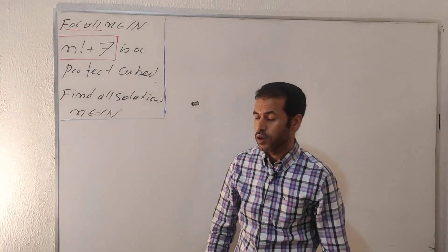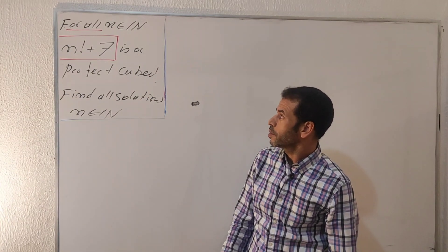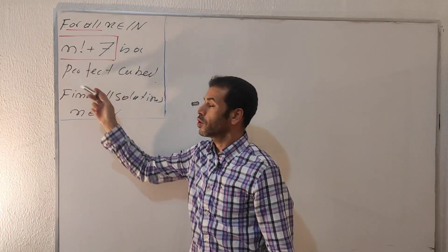In today's video, here is a very nice and quick number theory problem. Here is the following setup: for all n as a natural number, we have n factorial plus number seven is a perfect cube.